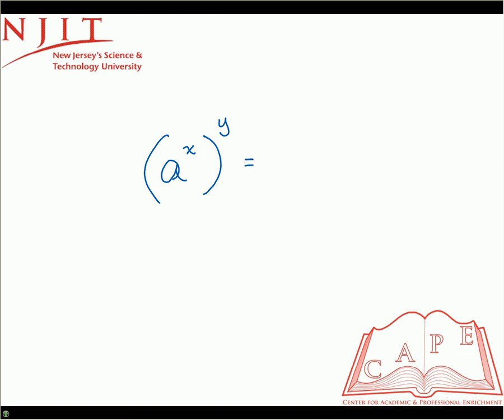Instead of adding the exponents, you multiply them. So this is the same thing as saying a raised to the x times y.